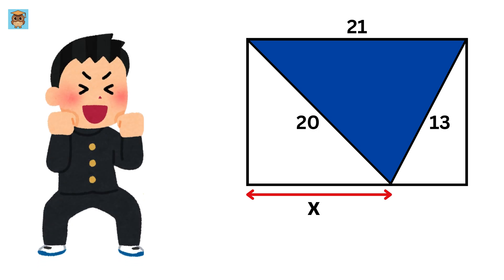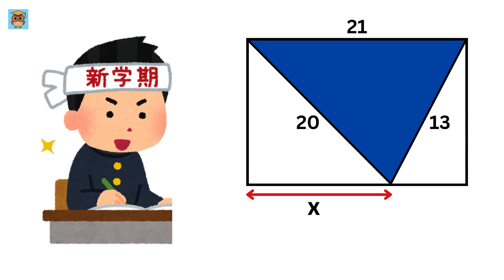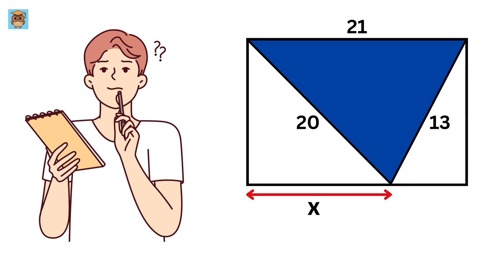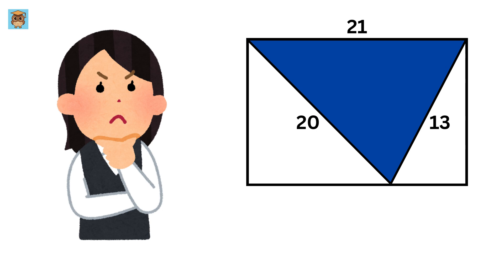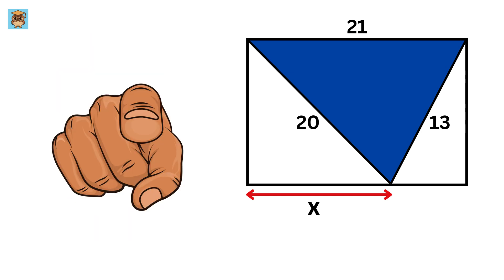Today, we will be solving this incredible geometry problem that will challenge your math skills. So, get your pen or pencil, notebook, and your brain ready. We have this rectangle inside of which we have this scaling triangle. This side is of length 13, this is of length 20, and this base is of length 21 units. Our job is to find the value of the length of this piece, or X. So, can you solve it?